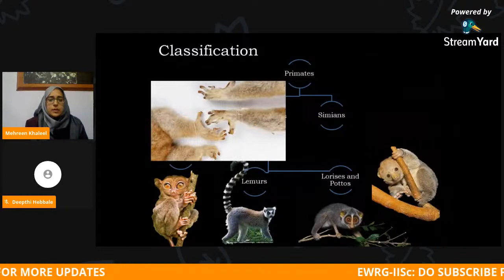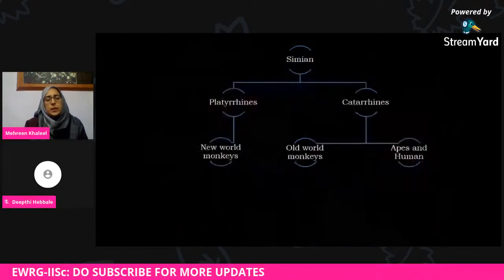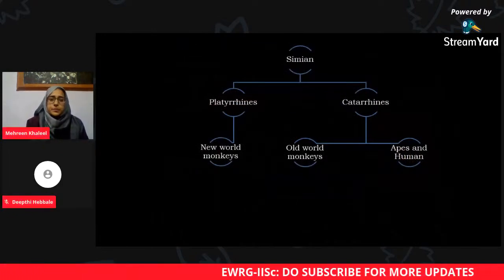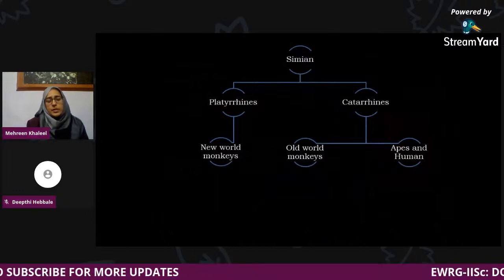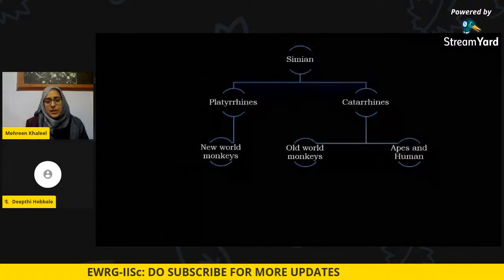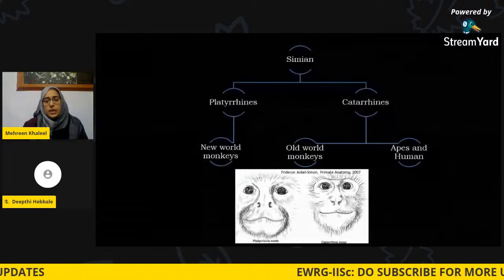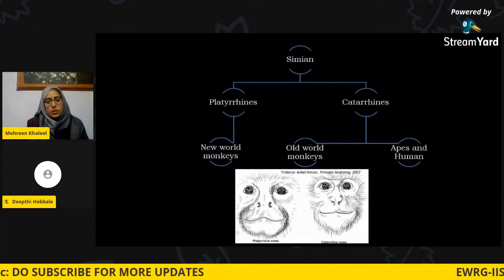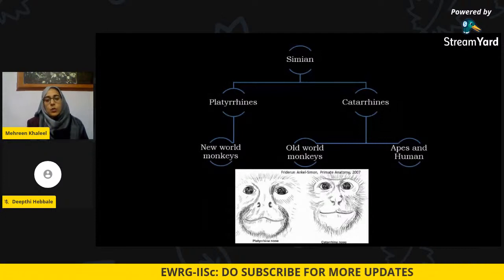The grooming claw is absent in the other group called simians. All monkeys, langurs, baboons, apes, and humans come in the simian group. Simians can be differentiated into two groups taxonomically: platyrrhines, the flat-nosed, and catarrhines. Platyrrhines have outward-facing nostrils, whereas catarrhines have downward-facing nostrils. This is one of the striking features distinguishing these two categories.